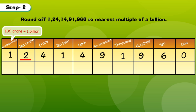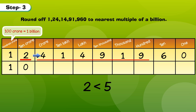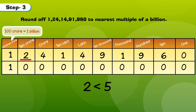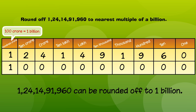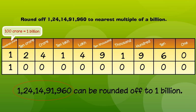Step 3: The underlined digit is less than 5, so we replace all digits on the right side to 0. Thus, 1,024,014,091,960 can be rounded off to 1 billion people.